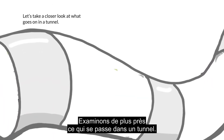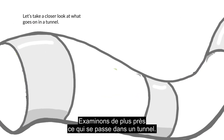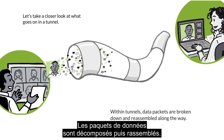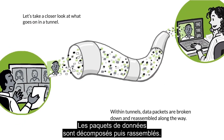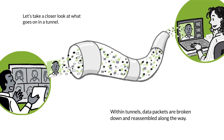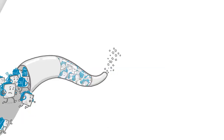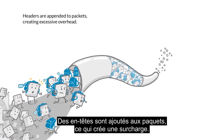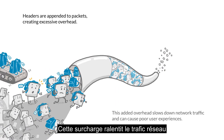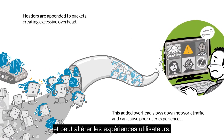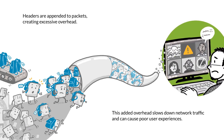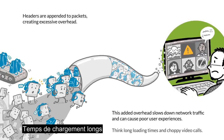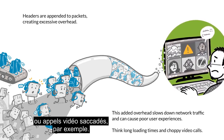Let's take a closer look at what goes on in a tunnel. Within tunnels, data packets are broken down and reassembled along the way. Headers are appended to packets, creating excessive overhead. This added overhead slows down network traffic and can cause poor user experiences — think long loading times and choppy video calls.